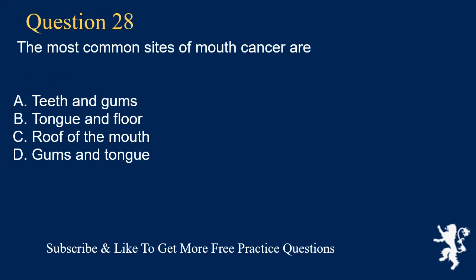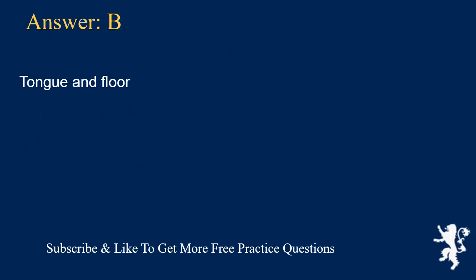Question 28. The most common sites of mouth cancer are: A. Teeth and gums, B. Tongue and floor, C. Roof of the mouth, D. Gums and tongue. Answer: B. Tongue and floor.